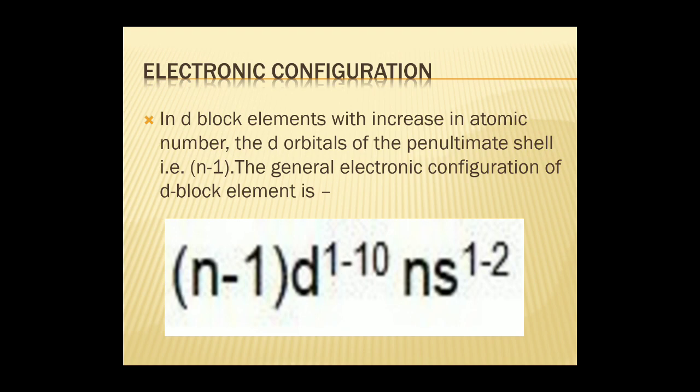Now we come to an important topic: the electronic configuration of D block elements. With an increase in atomic number, the D orbitals of the penultimate shell are filled. The general electronic configuration is (n−1)d¹⁻¹⁰ ns¹⁻².